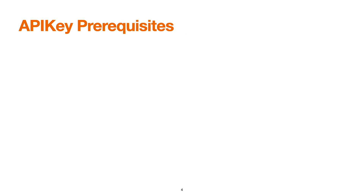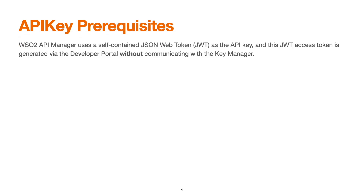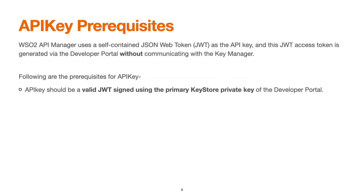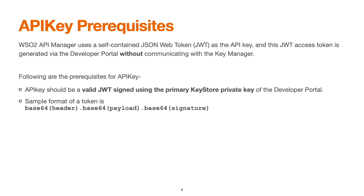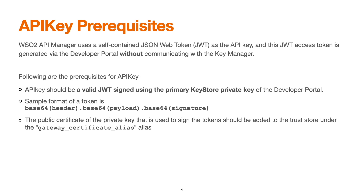What are the prerequisites for API key generation? WSO2 API Manager uses a self-contained JSON Web Token as an API key. This JWT is generated via the developer portal without communicating with the key manager. It should be a valid signed JWT using the primary key store private key of the developer portal. The token format is: base64 header, base64 payload, and a signature part. The public certificate of the private key used to sign the token should be added to the trust store under the gateway certificate area.